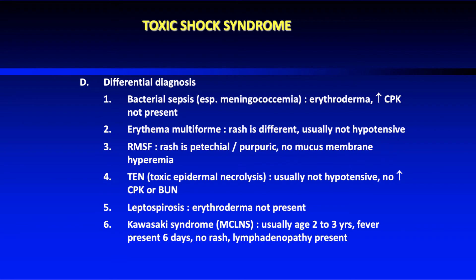The main differential diagnosis for toxic shock syndrome is bacterial sepsis. Remember, toxic shock syndrome is not sepsis per se — it is a manifestation of a specific Staphylococcus toxin. Other differentials include erythema multiforme, Rocky Mountain spotted fever, toxic epidermal necrolysis, leptospirosis, and Kawasaki syndrome.